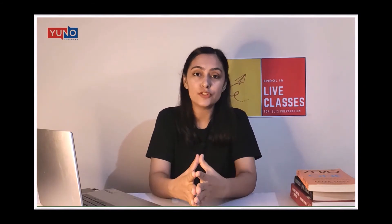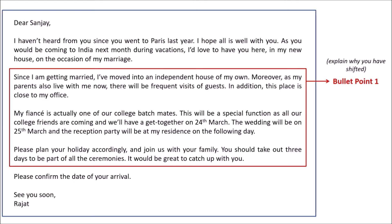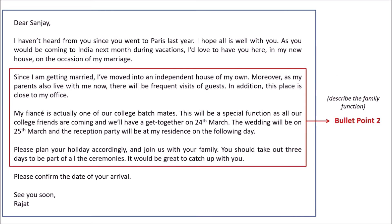While writing these paragraphs you have to be very imaginative, as you need to create a story for each point. Think of ideas and write a few sentences for each bullet point. You can think of similar instances from your life or someone else's life. Bullet point one says 'explain why you have shifted,' so accordingly I've written: 'Since I'm getting married, I've moved into an independent house of my own. Moreover, as my parents also live with me now, there will be frequent visits of guests. In addition, this place is close to my office.'